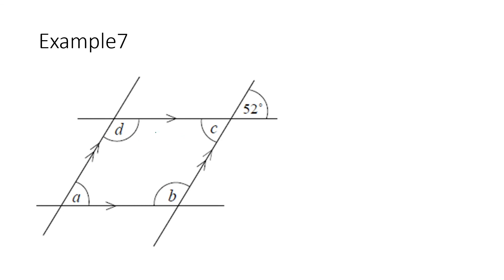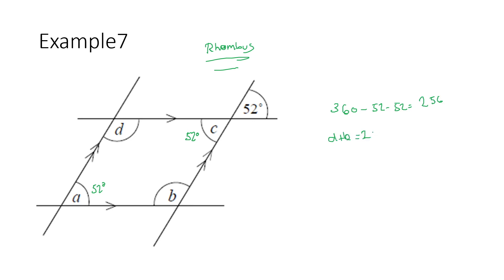Find A, B, C, and D. C is easy — vertically opposite angles are equal, so C is 52 degrees. The parallel lines show this is a rhombus, so A and C are equal angles, and B and D are also equal. A quadrilateral adds up to 360 degrees. So 360 take away two values of 52 gives 256. Since B and D are equal, 256 divided by 2 gives 128 degrees — so B and D are 128 degrees each.